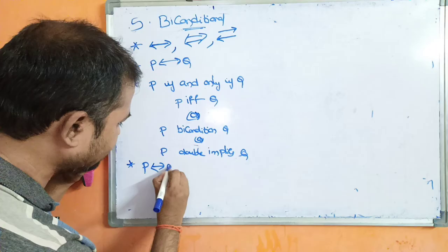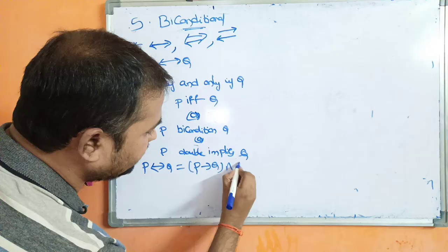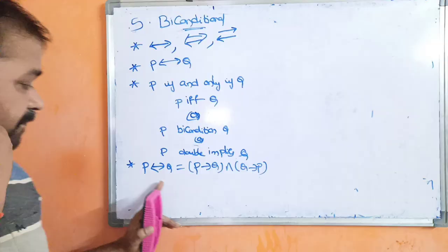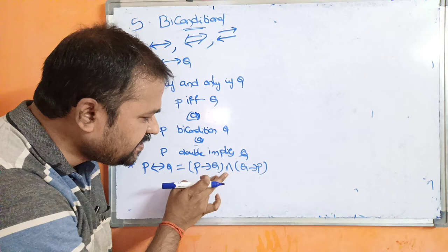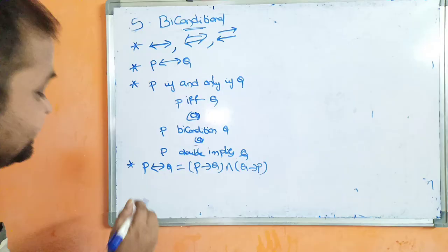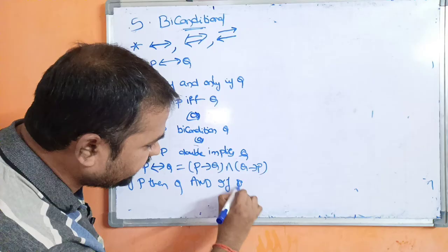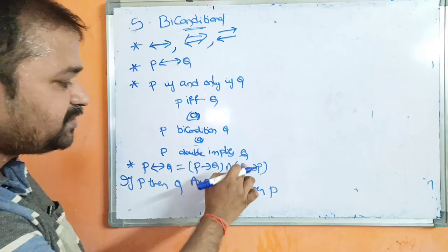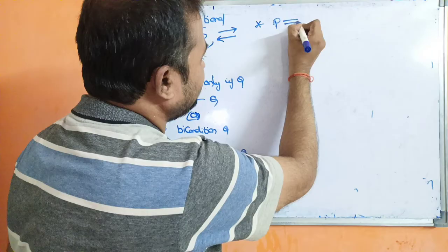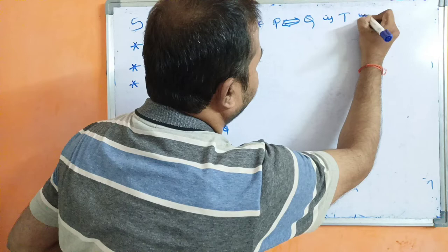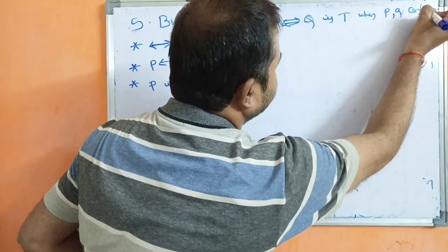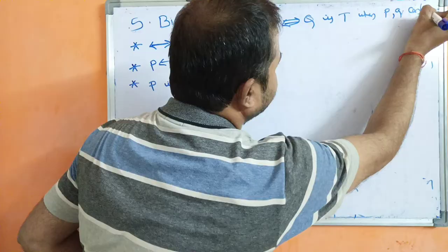P↔Q is equivalent to the conjunction of (P→Q) and (Q→P), which can be read as 'if P then Q, and if Q then P.' P↔Q returns true when P and Q contain the same truth value — either both true or both false. Otherwise, it is false.